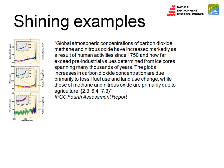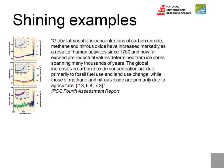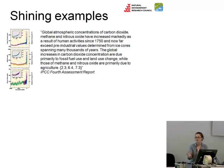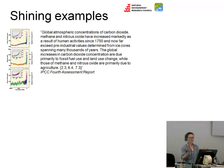The global increases in carbon dioxide concentration are due primarily to fossil fuel use and land use change, while those of methane and nitrous oxide are primarily due to agriculture. It's so clear and so good, and yet it's quite difficult to get to that from reading the evidence itself. You need somebody to have made that summary statement in order to understand the whole body of science about climate change.